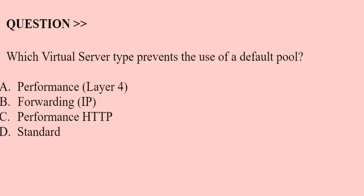Next question: Which virtual server type prevents the use of a default pool? Option A: Performance Layer 4. Option B: Forwarding. Option C: Performance HTTP. Option D: Standard. Correct answer is Option B.